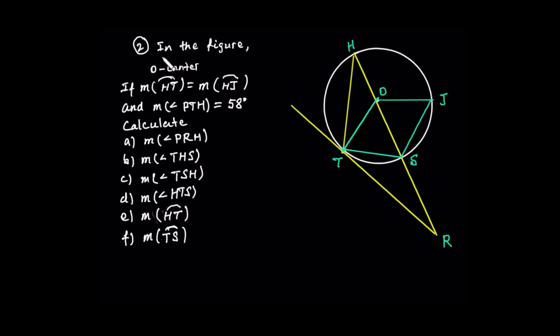Let's take a look at this figure. In the figure, O is the center. The measure of arc HT is equal to the measure of arc HJ.